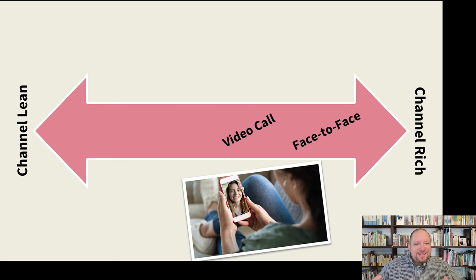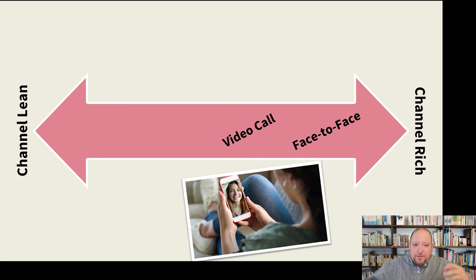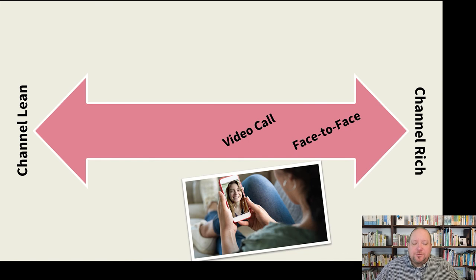A somewhat more limited option is a video call. We can still see the person, hear their voice and tone of voice, and sort of see what they're wearing, but you can only see what the other person wants you to see — you can't see outside the scope of the video lens. So it's not quite as channel rich; there are things that are controllable, and we can't get the full experience like we can in a face-to-face conversation. But it's still relatively channel rich.